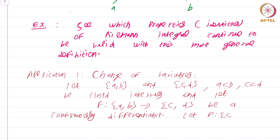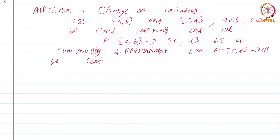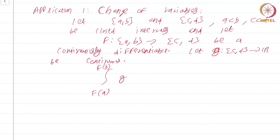Let g from [c,d] to ℝ be continuous. The question that change of variables seeks to answer is: what is ∫_{φ(a)}^{φ(b)} g? Note there is no necessity for φ(a) to be less than φ(b) — it could be the case that φ(b) is actually less than φ(a). That is why I had to make the definition just stated. So ∫_{φ(a)}^{φ(b)} g is nothing but ∫_a^b g(φ(x)) φ'(x) dx.